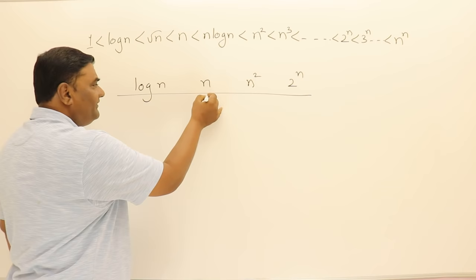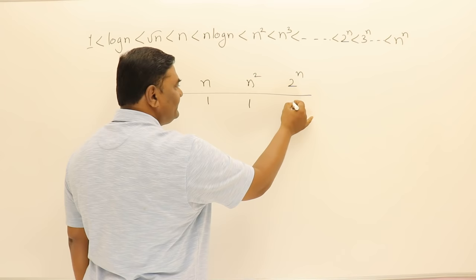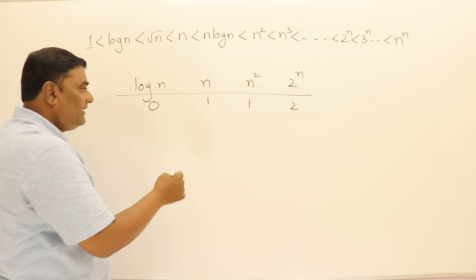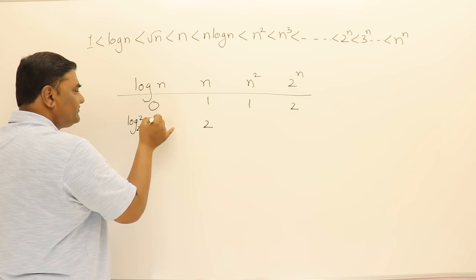If I take n value as 1, log 1 will be 0 and this will be 1 and this will be 2. 2 power 1 is 2. If I take this as 2 then log 2 base 2 is 1, this is 1 and this is 4 and this is also 4.